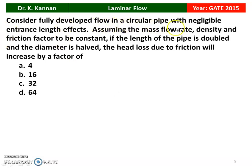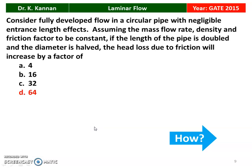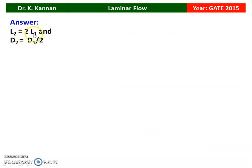Next question from the 2015 question paper: consider fully developed flow in a circular pipe with negligible entrance length effects. Assuming mass flow rate, density, and friction factor are constant, the pipe length is doubled (L2 = 2L1) and diameter is halved (D2 = D1/2). The head loss due to friction will increase by a factor of — options: 4, 16, 32, or 64. The correct answer is 64, option D.